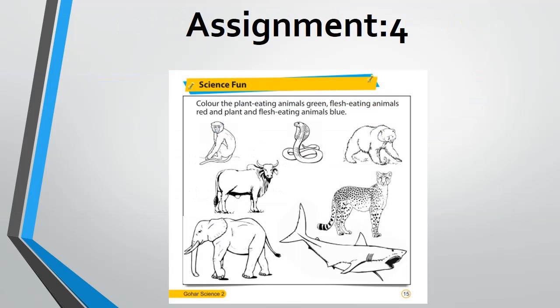Assignment number 4, Science Fun: color the plant-eating animals green, flesh-eating animals red, and plant and flesh-eating animals blue. So, animals that eat plants should be colored green, animals that eat meat should be colored red, and animals that eat both meat and plants should be colored blue. That was the last lecture for this unit. Hopefully you understood it well — complete the assignments carefully. We will meet again in the next lecture. Take great care of yourself. Allah Hafiz.